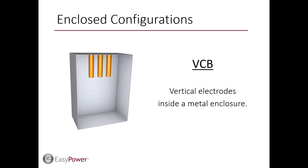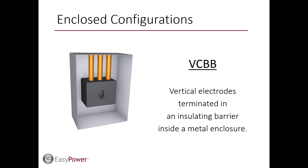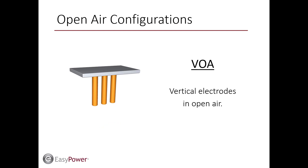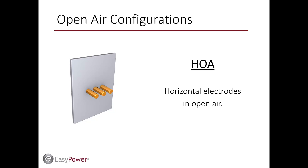The electrode configurations in the 2018 standard are: VCB — vertical electrodes inside a metal enclosure; VCBB — vertical electrodes terminating in an insulating barrier inside a metal enclosure; HCB — horizontal electrodes inside a metal enclosure; VOA — vertical electrodes in open air; HOA — horizontal electrodes in open air.